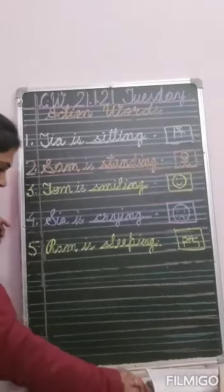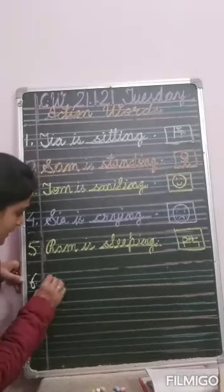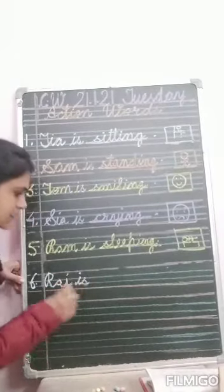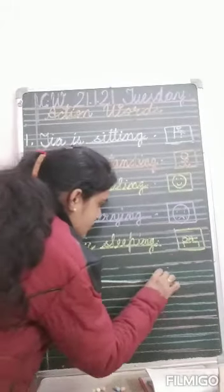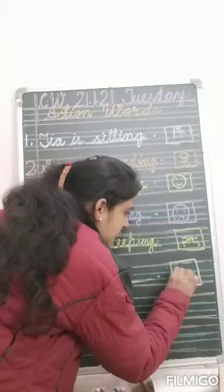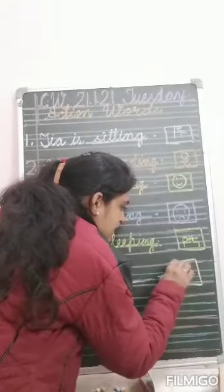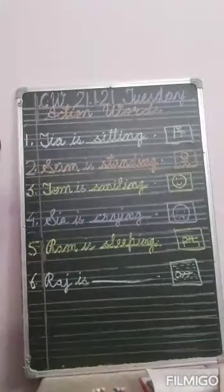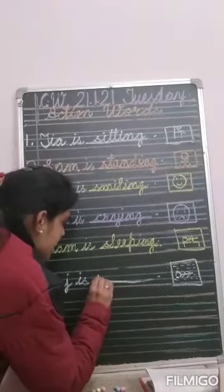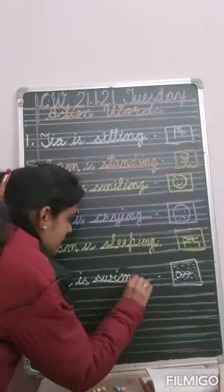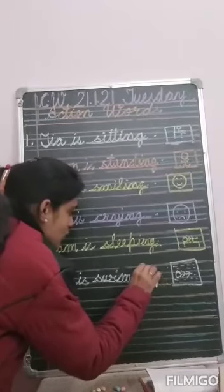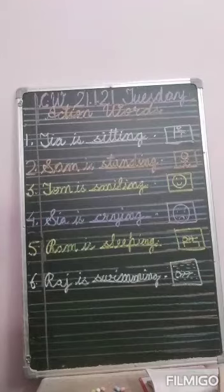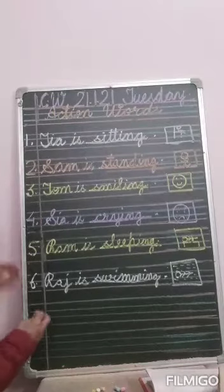Now number six. Raj is dash. You can see — what are you doing, Raj? Raj is swimming. Write down swimming. S-W-I-M-M-I-N-G. Raj is swimming.